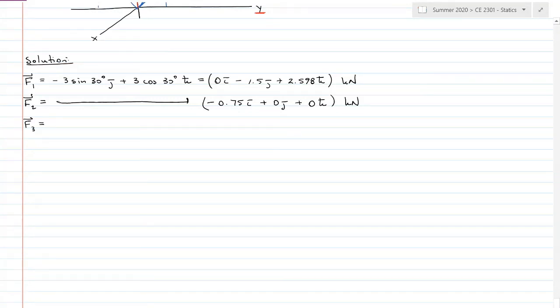Force 3. We do need to resolve force 3. I'll use similar triangles. We have 3 fifths of 1.5 j plus 4 fifths of 1.5 k, which gives us 0 i plus 0.9 j plus 1.2 k kilonewtons.